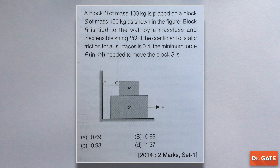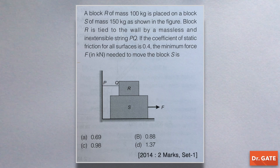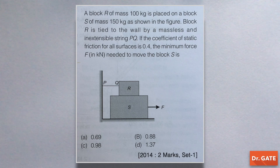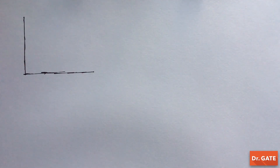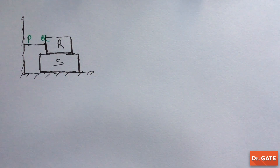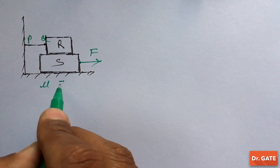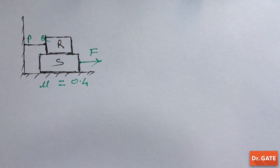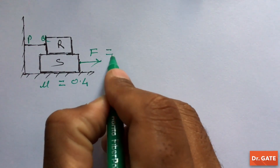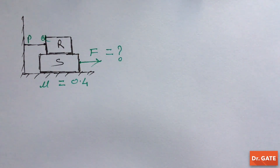Let's solve one more numerical. A block R of mass 100 kg is placed on a block S of mass 150 kg as shown in the figure. Block R is tied to the wall by a massless and inextensible string PQ. The coefficient of static friction for all surfaces is 0.4. We have to find the minimum force in kN needed to move block S.